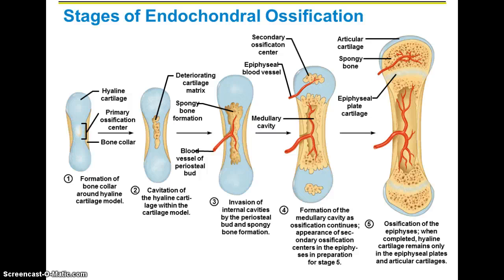How this works is we have a hyaline cartilage model. In order for bone to form, that hyaline cartilage model must be broken down as ossification proceeds. At the ends of the long bones, we're going to have the extra left over called articular cartilage, which acts as a cushion and prevents friction from the bones rubbing against each other.